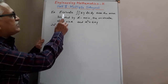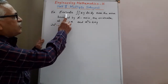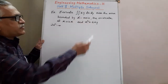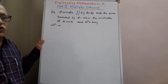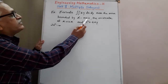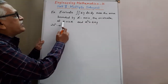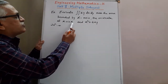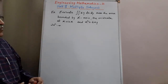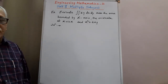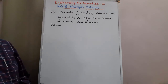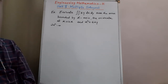Let us see the example: evaluate double integration of xy with respect to xy over the area bounded by the x-axis, the ordinate at x equals 2a, and the curve x squared equals 4ay. Area bounded by these three different types of curves.